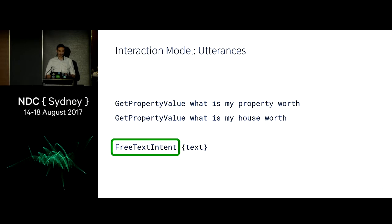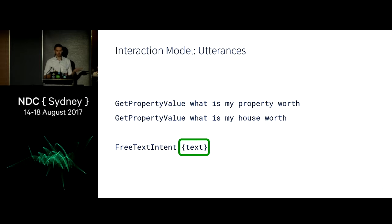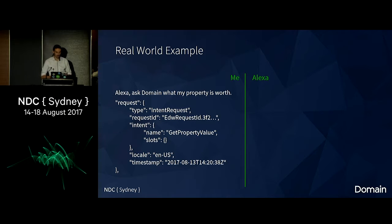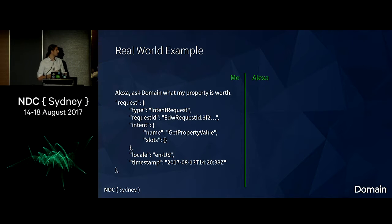You have to map all this in the utterances section of the dev portal, where you give the intent name and example phrases users might say to trigger it. For the 'get property value' intent, the utterance could be 'what is my property worth?' You don't have to cover every single case because Amazon does a lot of the natural language processing for you.